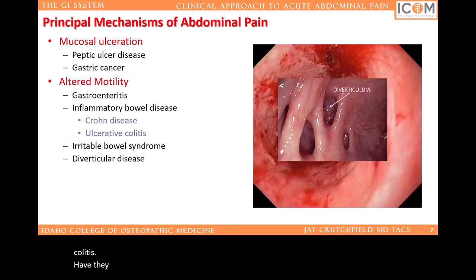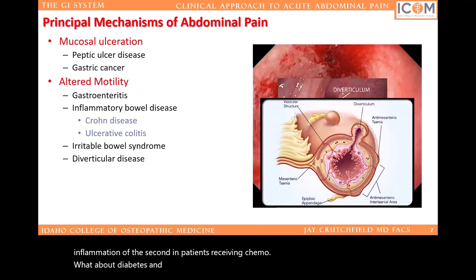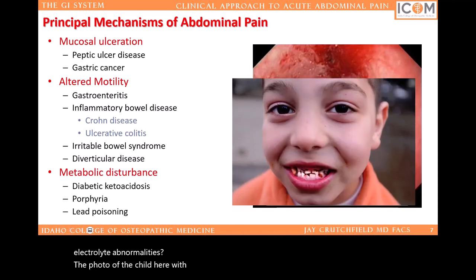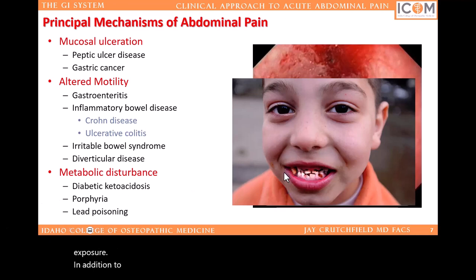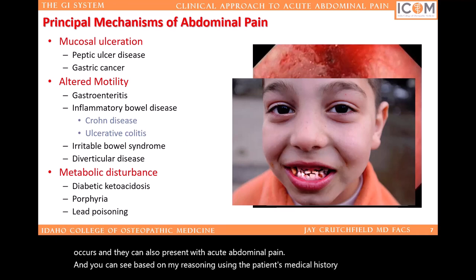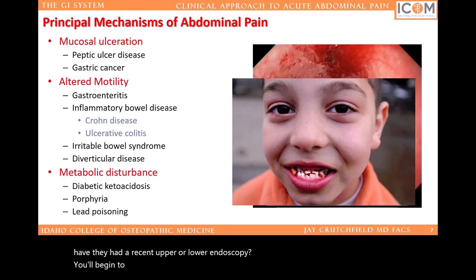The photo of the child here with lead poisoning reveals only a few of the problems with lead exposure. In addition to poor dentition in patients with lead exposure, demineralization of the enamel occurs, and they can also present with acute abdominal pain. Based on my reasoning, using the patient's medical history and old records — have they had a recent upper or lower endoscopy? — you'll begin to diagnose quickly and hopefully accurately.